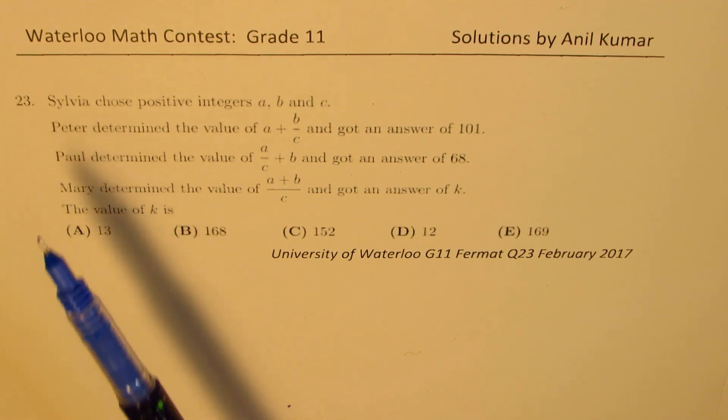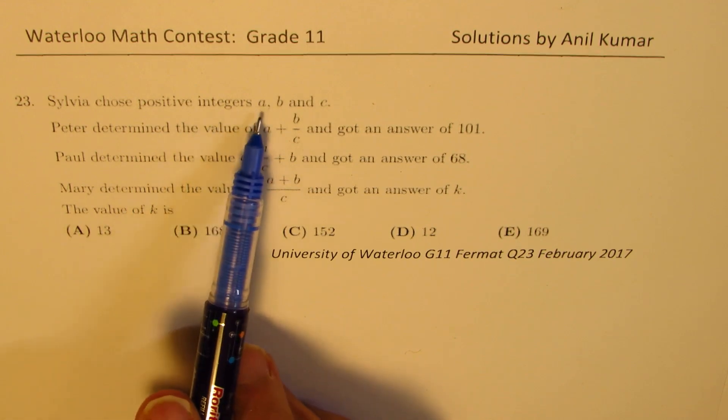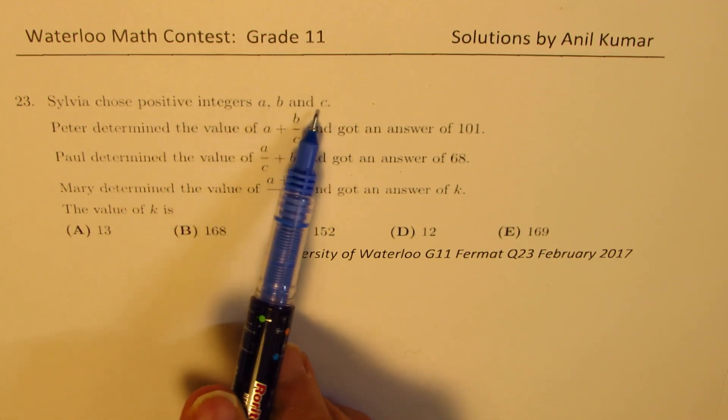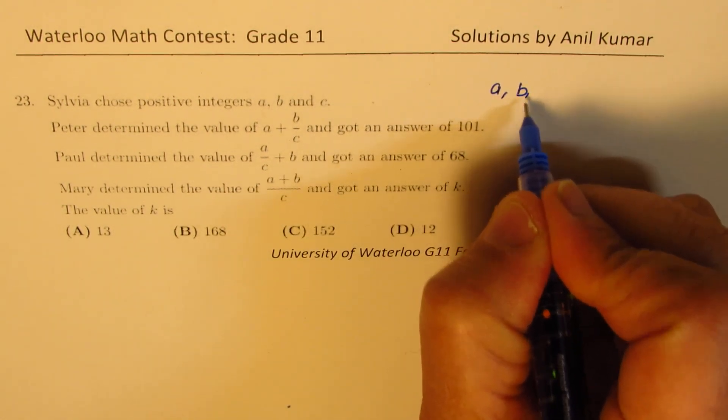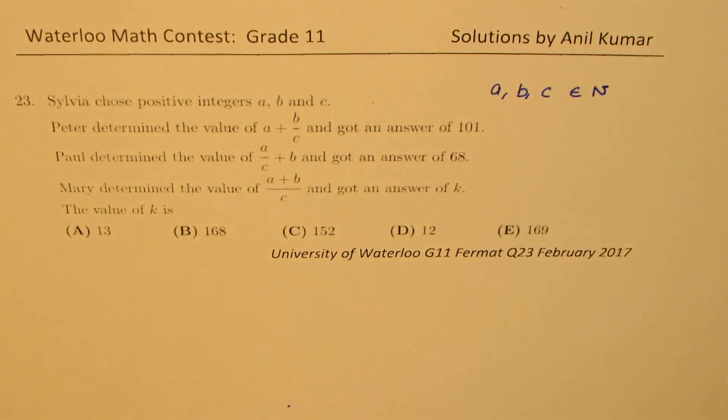Okay, the question here is Sylvia chose positive integers A, B, and C. So A, B, and C are natural numbers. So let me write down as we read. They belong to set of natural numbers.